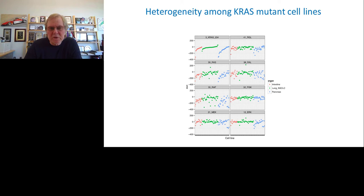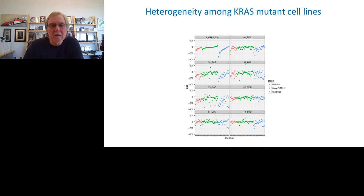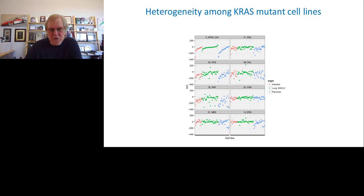Drilling down on well-known elements such as RAF kinase, we can examine dependence of different cell lines — blue for pancreatic, green for lung, and red for GI tumor-derived cell lines. The further down the slope, the more dependent a cell line is on that particular protein. Looking at the RAF plot, dependencies are all over the place — some cell lines depend on RAF, others don't — demonstrating tremendous heterogeneity and the complexity of shutting down the network with small molecule drugs.